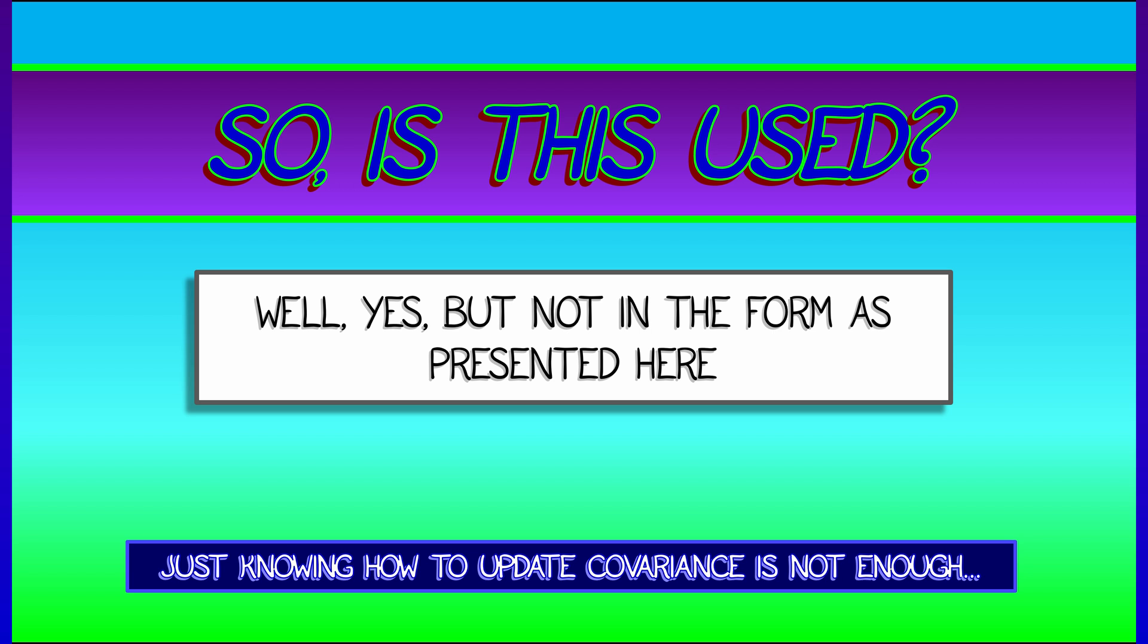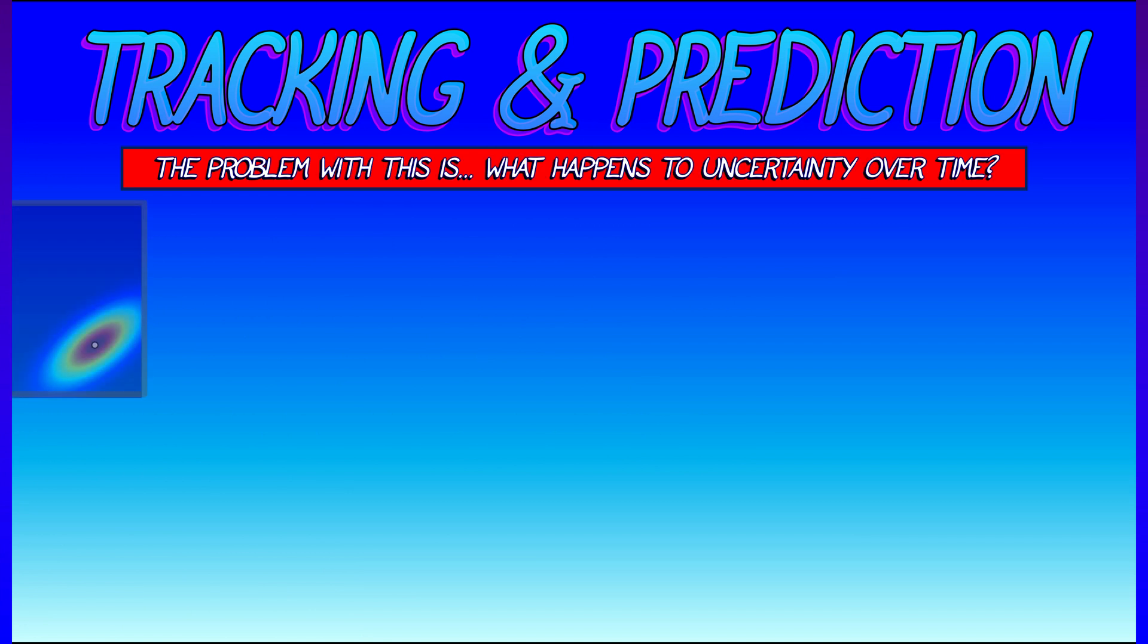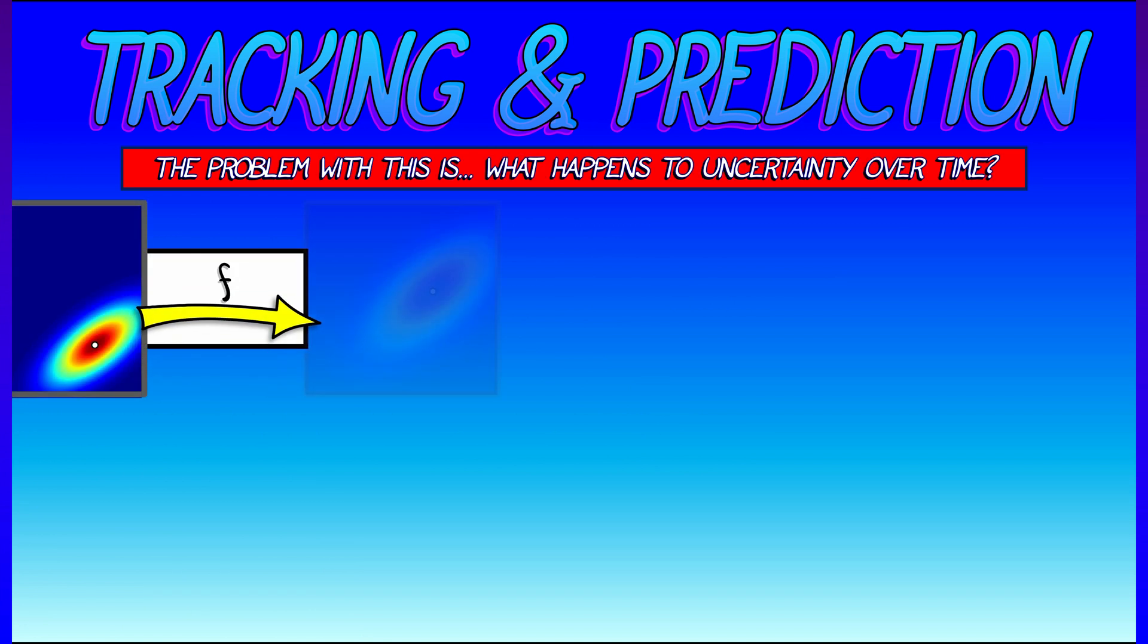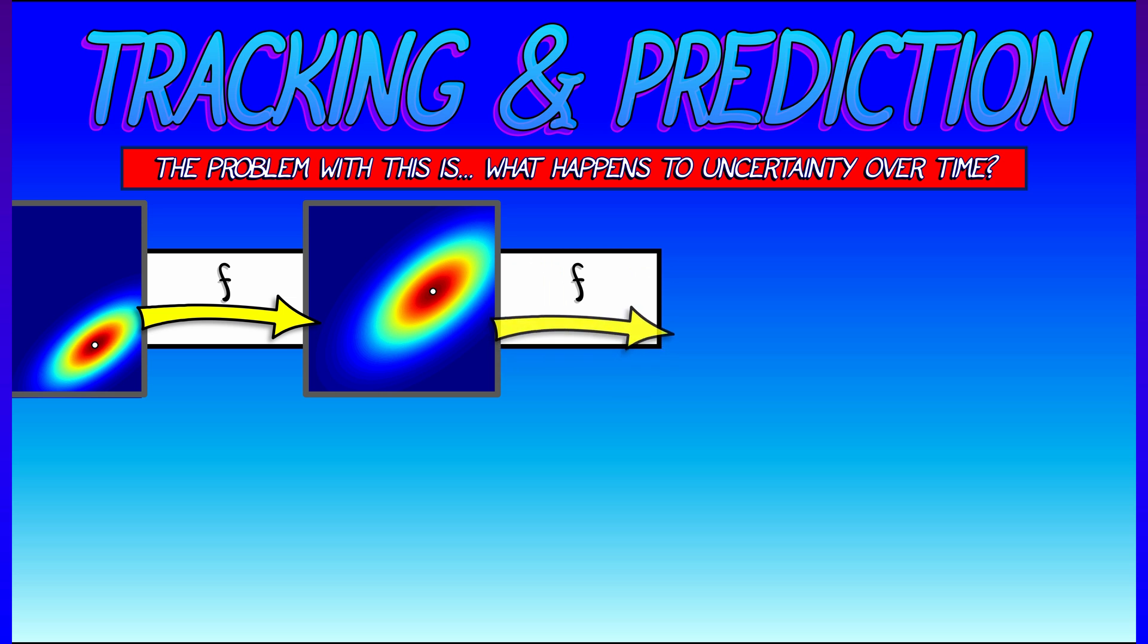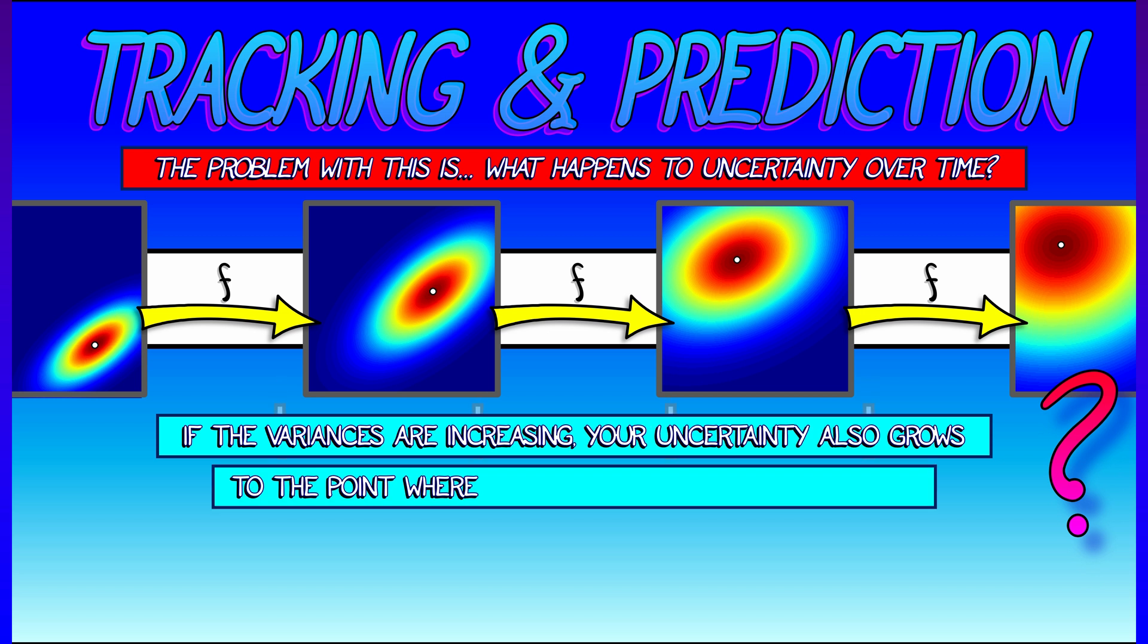But what we've done isn't the full picture. There's a problem. And the problem with this is what happens when you have uncertainty and you just keep evolving things over time. As you keep updating your covariance matrix, whatever uncertainty you have likely gets expanded. It grows, you know less and less at each time step about what your state is.